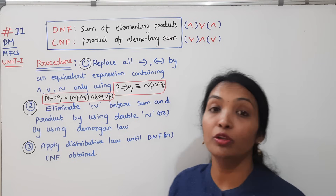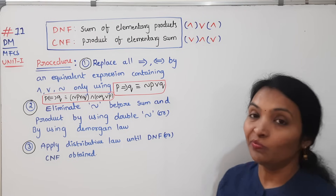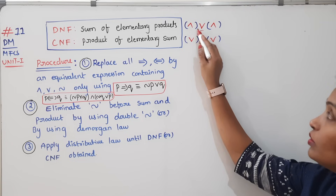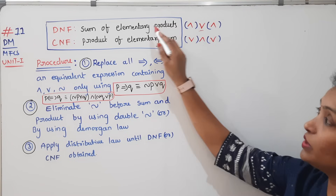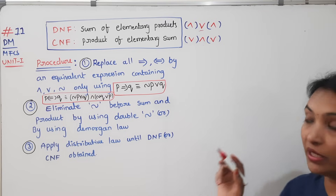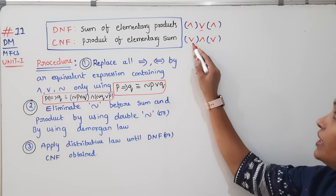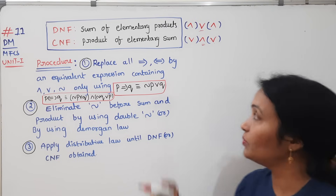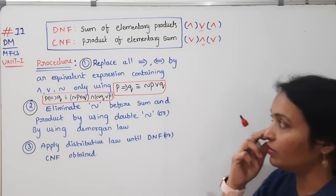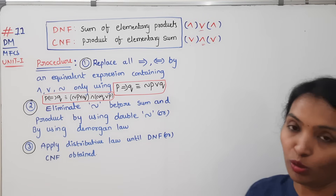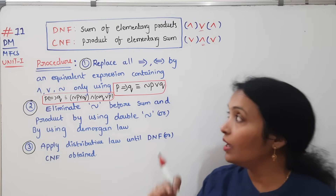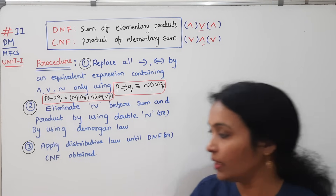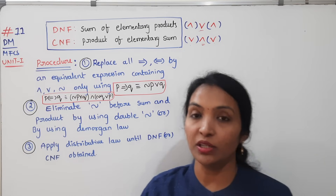In the previous video, we covered elementary products — these are AND statements. DNF is the sum of elementary products. CNF is the product of elementary sums. We will now work with these component statement forms.